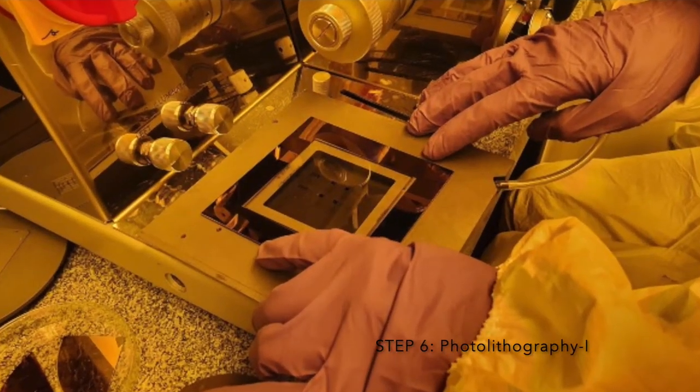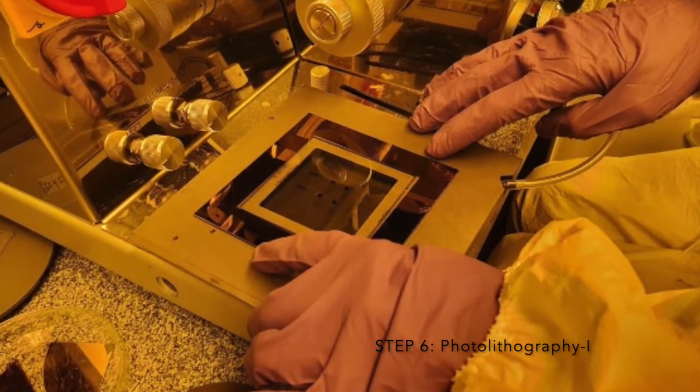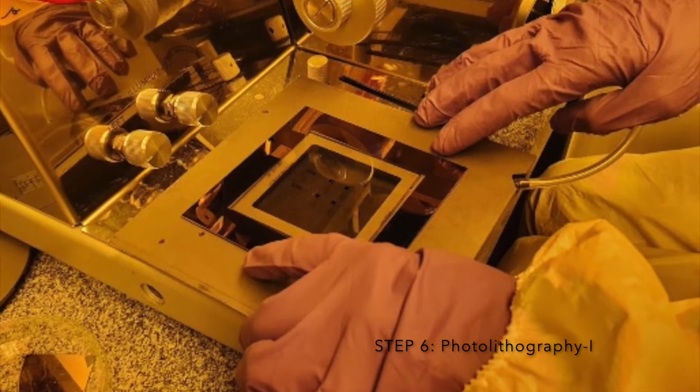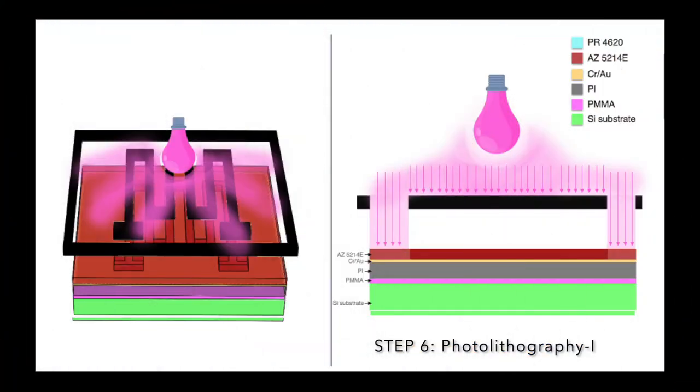We then insert this mask into a photolithography mask aligner which will expose our photoresist coated silicon substrate to a controlled dose of UV radiation.